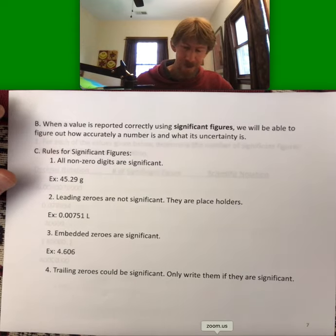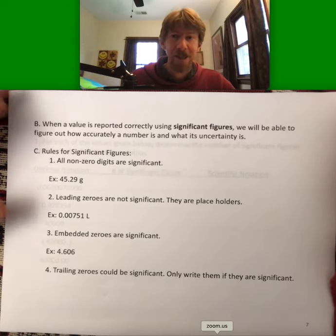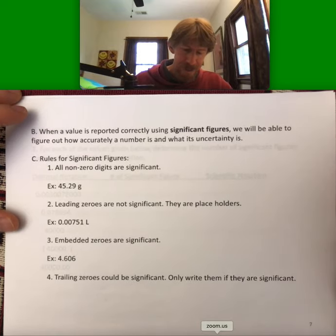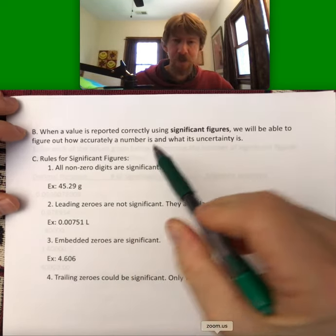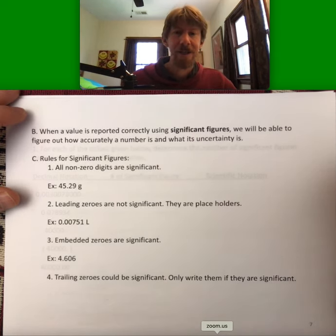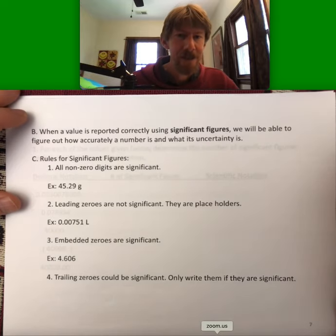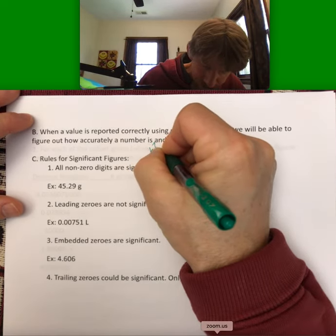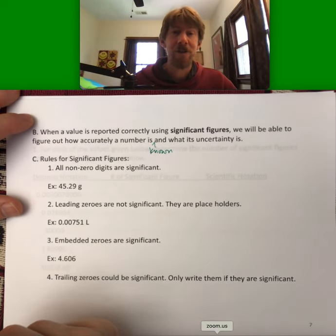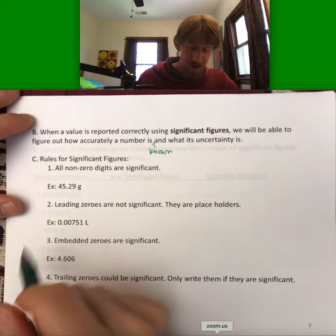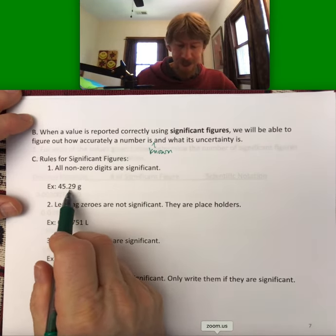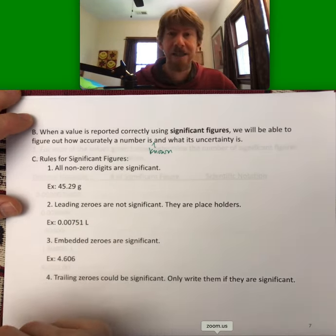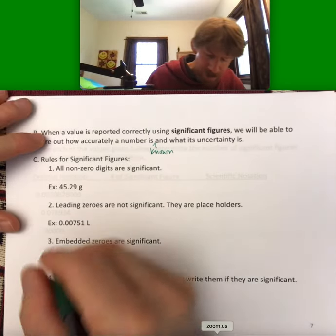And now let's talk about how to tell just by looking at a number whether it's significant or not. So when a value is reported correctly using sig figs, we will be able to figure out how accurately a number is known and what its uncertainty or error is. Rules for significant figures: all non-zero digits are significant. In this example, they're all non-zero digits, there are no zeros, and there are four sig figs.